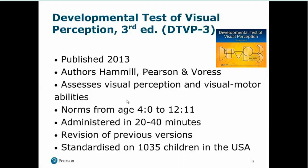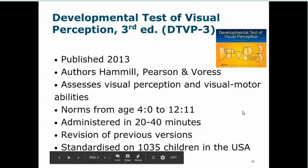These are all very much bottom-up assessments. The DTVP3 has both a visual perception element and a visual motor element. The norms are from age four up to 12 years and 11 months, and it takes 20 to 40 minutes to complete depending on the age of the child and basal and ceiling rules. I meet a lot of clinicians still using the DTVP2 who weren't aware there is a third edition.